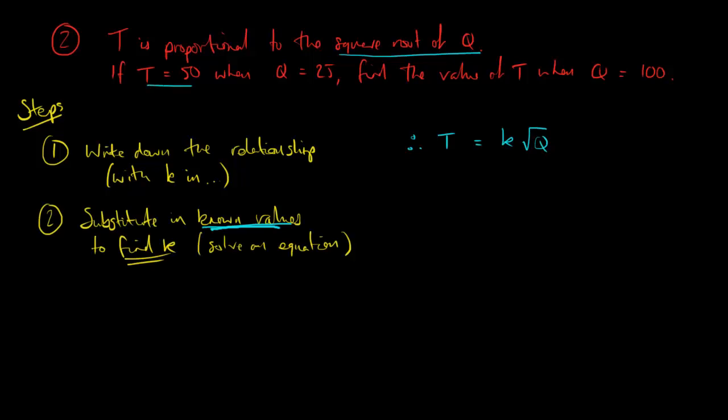Next step, substituting the known values. I know that when t is 50, q is 25. I can put those in. Substitute them directly in there. So replace t with a 50 and replace q with 25. So k times root 25. And root 25 is 5.